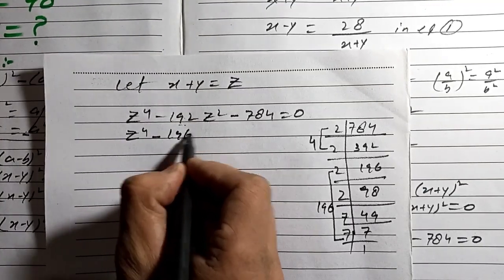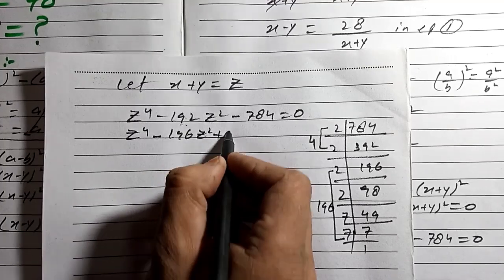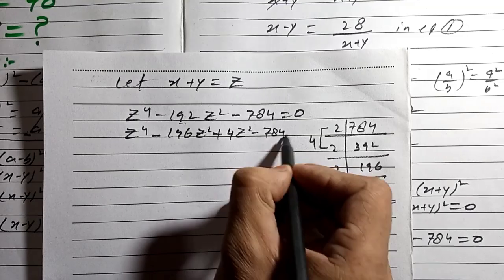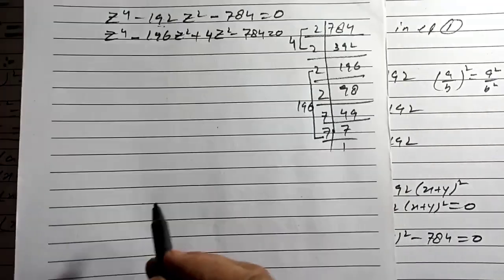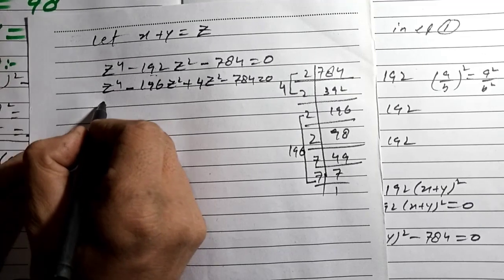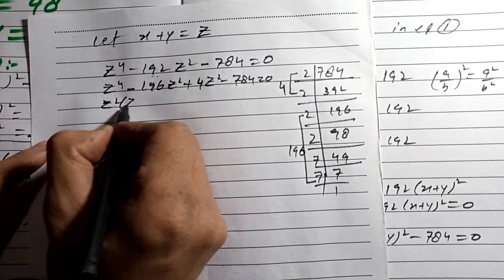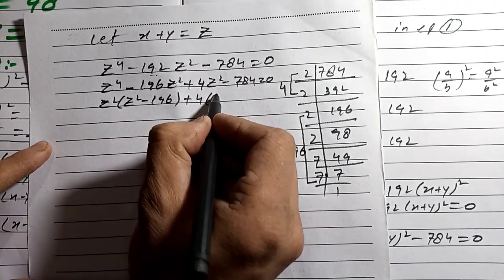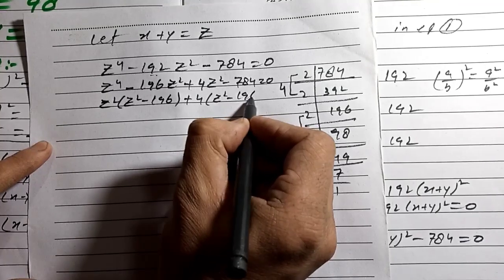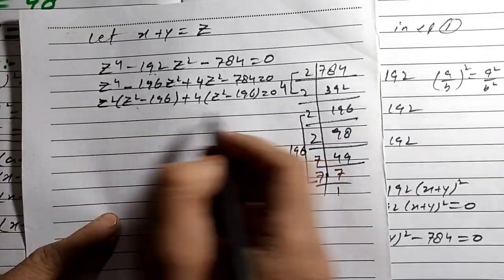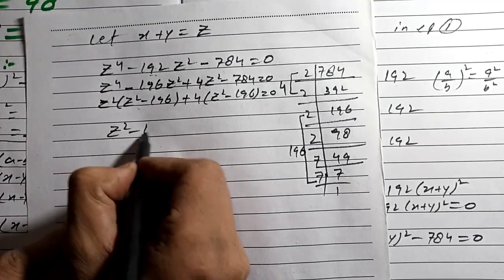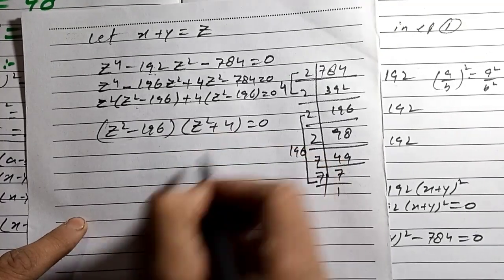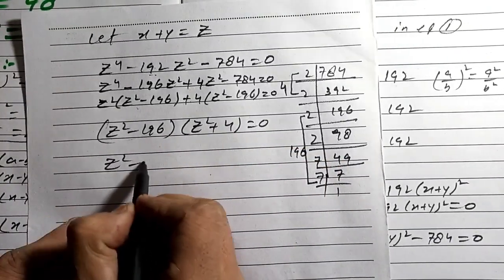We split the middle term: z⁴ minus 196z² plus 4z² minus 784 equals 0. Taking z² as common from the first two terms and 4 from the last two: (z² minus 196)(z² plus 4) equals 0.